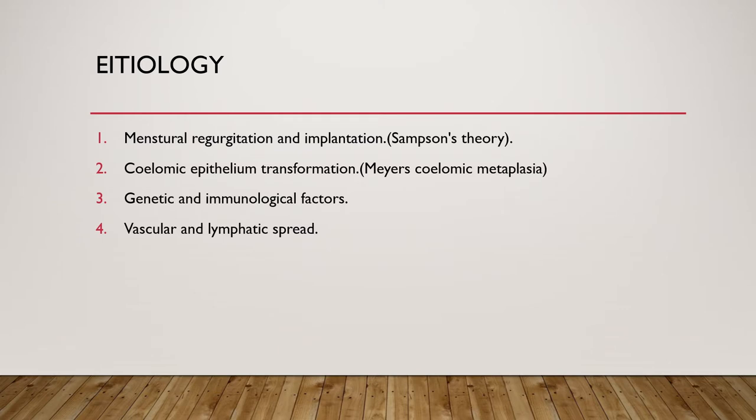What about the etiology of this condition? It is unlikely that a single theory can explain it, so there are multiple theories. The first is menstrual regurgitation and implantation, or Sampson's theory. It postulates that some endometrial tissue will pass through the fallopian tube and implant into the pelvic cavity. This has been found in laboratory animals and also in patients with outflow obstruction.